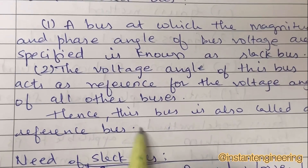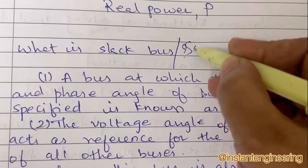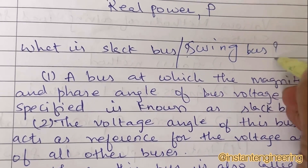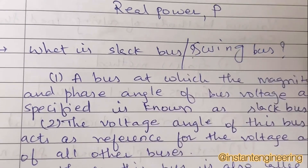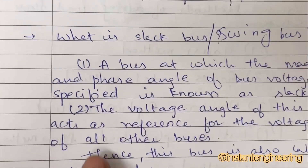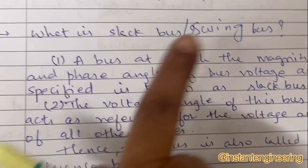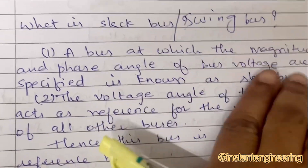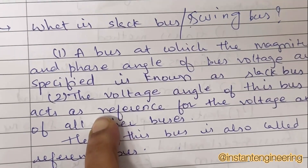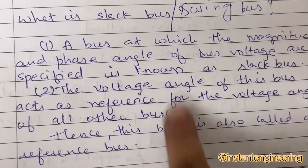The slack bus is also called as swing bus. Don't be confused — if asked what is swing bus, it is the slack bus only. A bus whose magnitude and phase angles are known is called slack bus, and that known voltage angle is taken as the reference angle for all other buses.